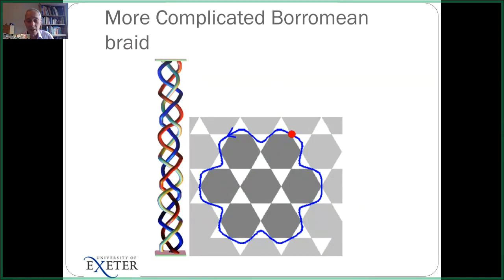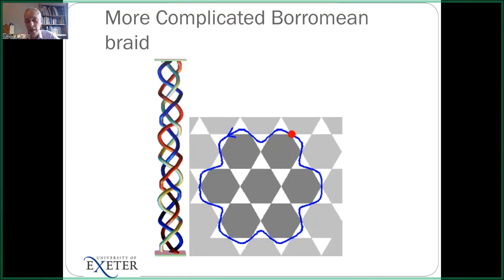Different hexagons correspond to having wound two of the strings through more than 2π. An open question is: can you play this game all the way up, going to third-order, fourth-order, fifth-order winding? You always end up with a plane with lots of holes in it and some sort of winding angle in that plane. My guess is that you can do this, but I'm not sure. Getting back to ordinary linking and helicity, I'll now go to the poloidal-toroidal formula.